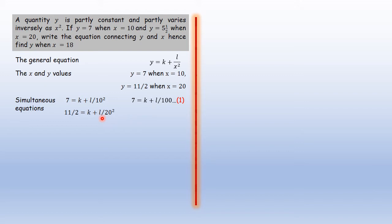And the other equation, you're going to have to put the value of y to be 11/2. And then 20 squared for x squared, because x is 20. That simplifies to 11/2 = k + l/400, which is the second equation.